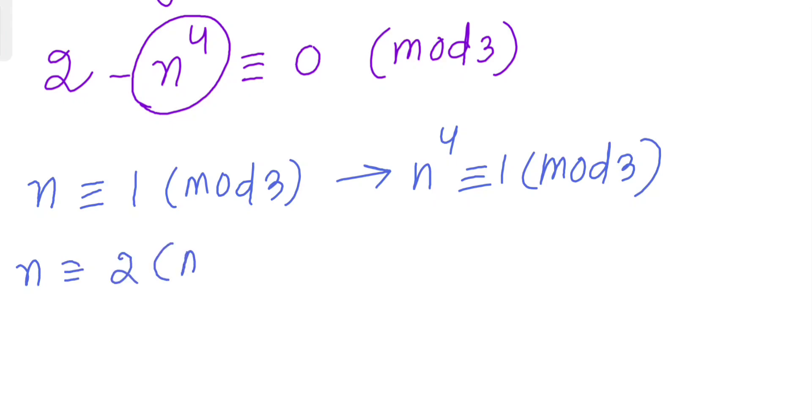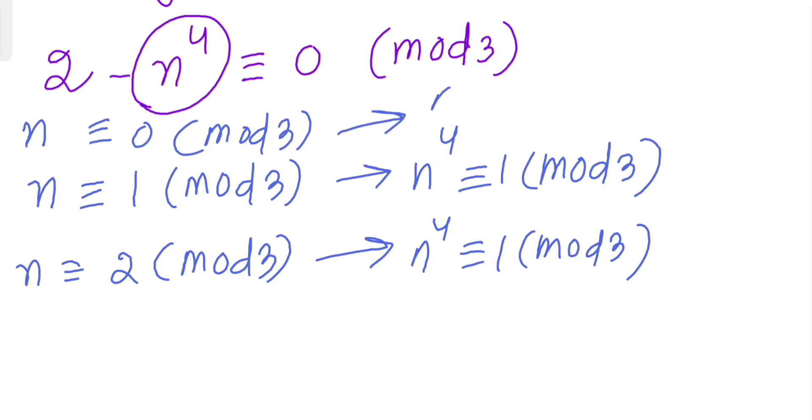When n ≡ 2 (mod 3), n^4 must be 1 mod 3 again. And most importantly, I forgot: when n ≡ 0 (mod 3), this taken to the fourth power gives 0 mod 3.